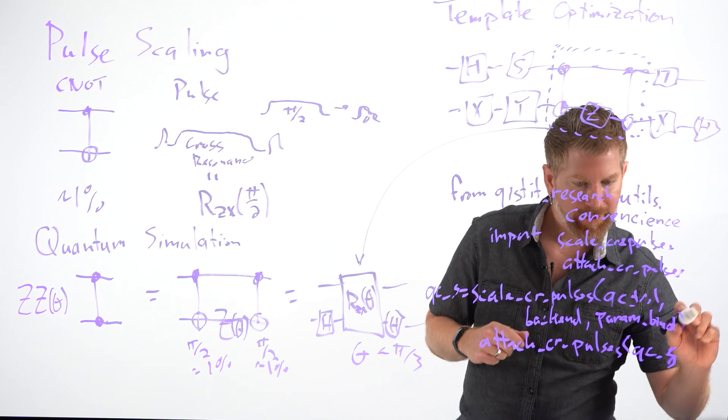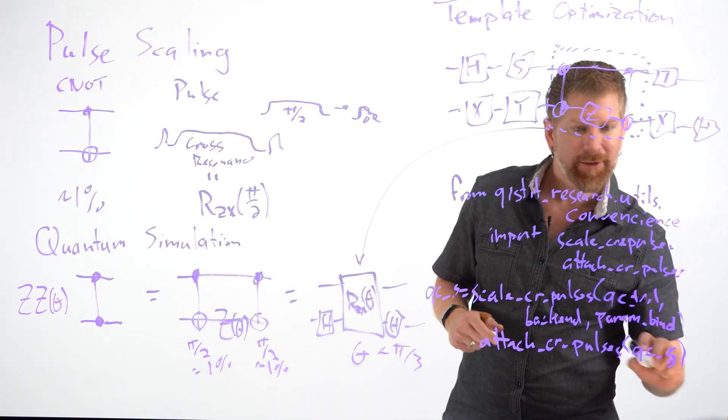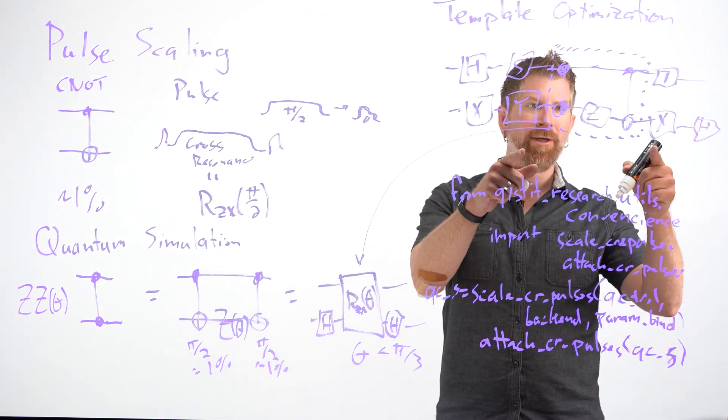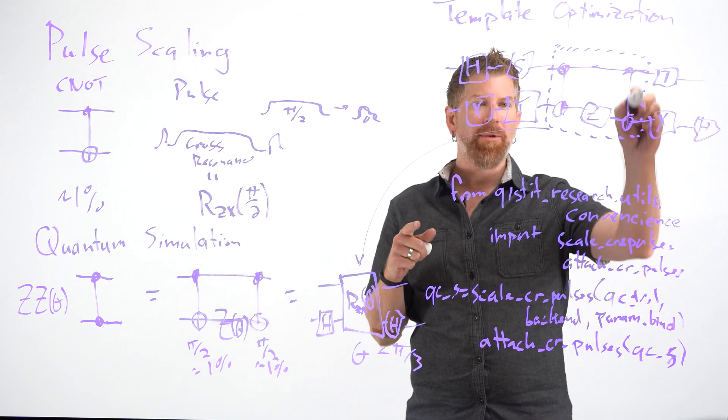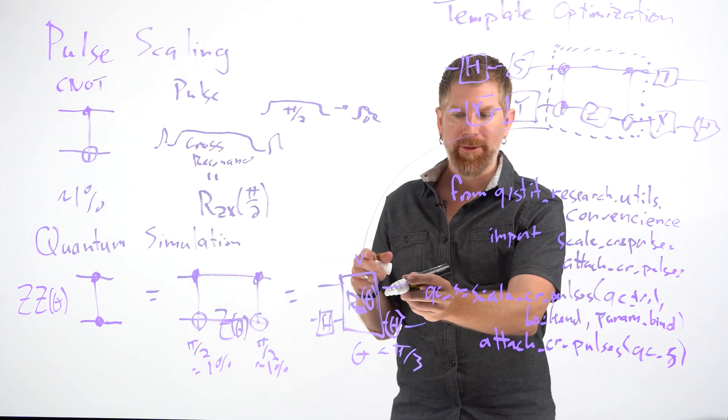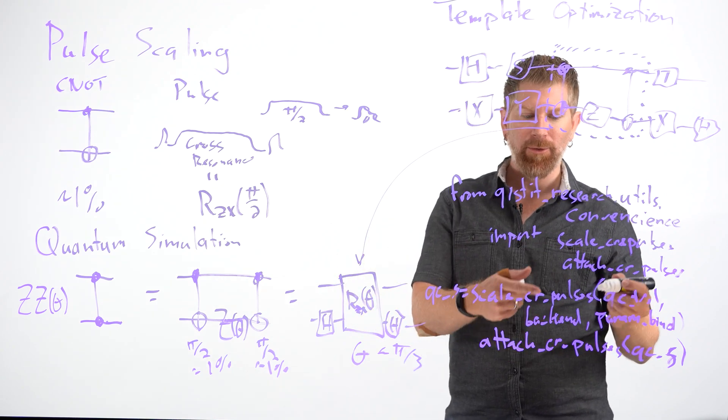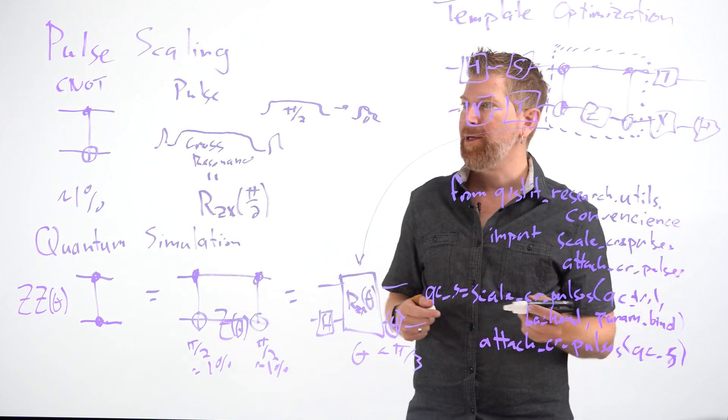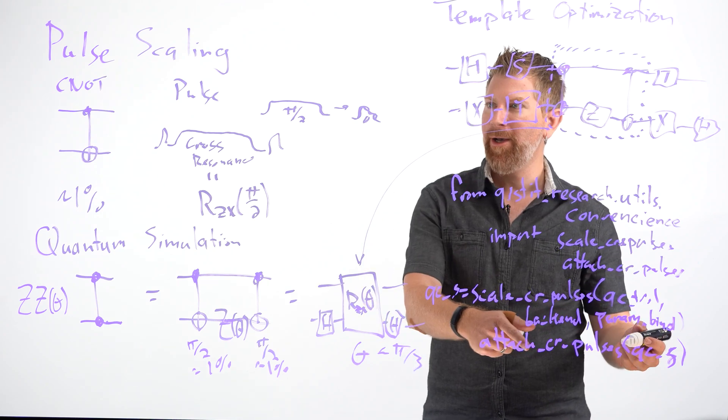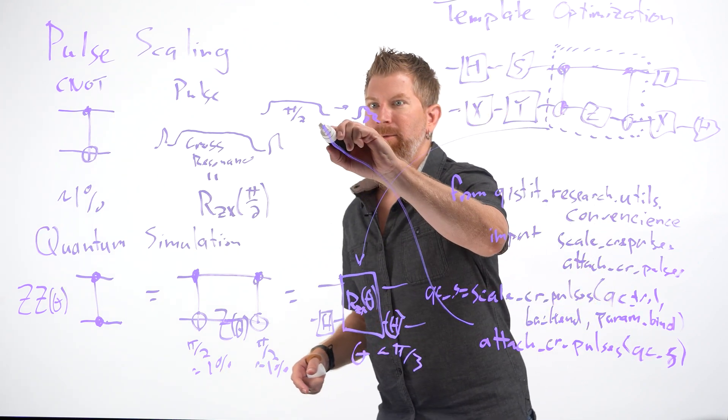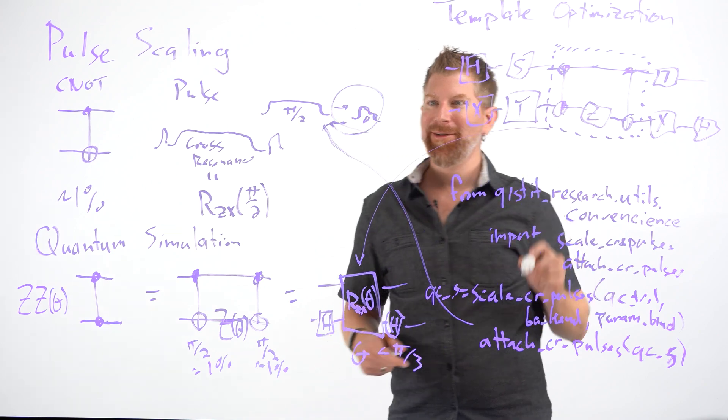And this is for your scaled circuit already because it has RZX's. So basically, this consists of two steps. One is analyzing your circuit, looking for things that can be more efficiently replaced, and replacing it with this in the abstract circuit sense. And then the attached CR pulses, if you provide the parameters to the backend, will go ahead and get these more efficient, smaller pulses.